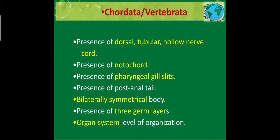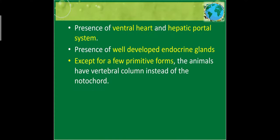The level of organization is organ system based — that means cell to tissue, tissue to organ, organ to organ system. This is known as the higher level of organization. They have a ventral heart and a hepatic portal system.